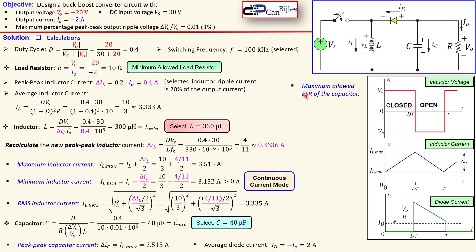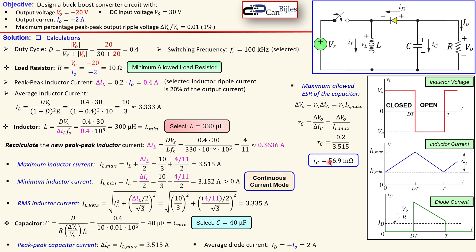Another important parameter is the maximum allowed equivalent series resistance (ESR) of the capacitor, which also affects the peak-peak output voltage ripple. The relationship approximates delta VO as related to the ESR (RC) and the peak-peak capacitor current, which equals the maximum inductor current. Since delta VO must be at most one percent of 20 volts — that is, 0.2 volts — substituting gives a maximum ESR of approximately 57 milliohms. A larger ESR increases the output ripple.